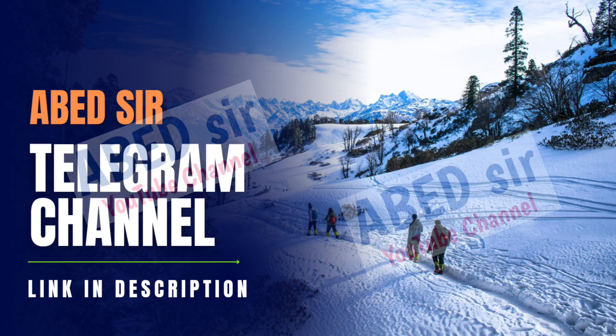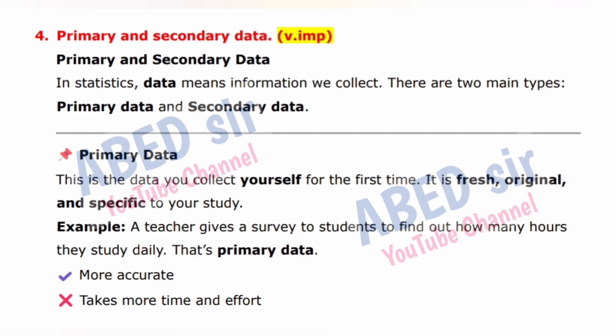Next important short question: Primary and Secondary Data. In statistics, data means information we collect. There are two main types: primary data and secondary data. Primary data is the data you collect yourself for the first time. It is fresh, original, and specific to your study. Example: A teacher gives a survey to students to find out how many hours they study daily — that's primary data.